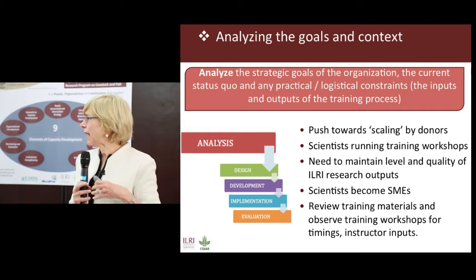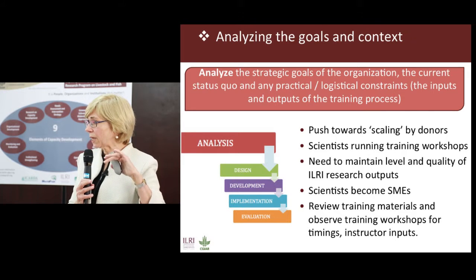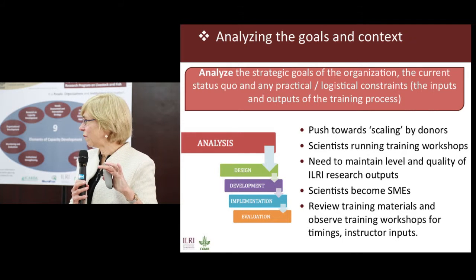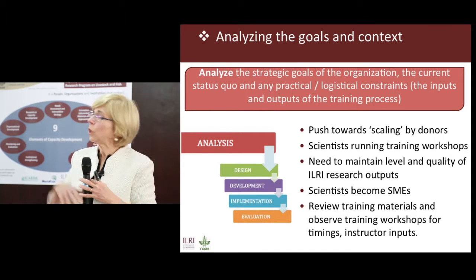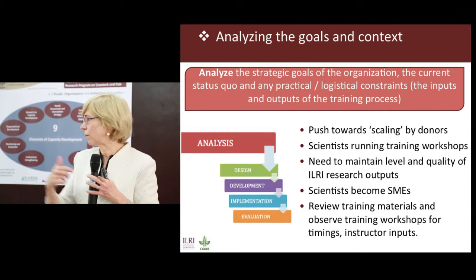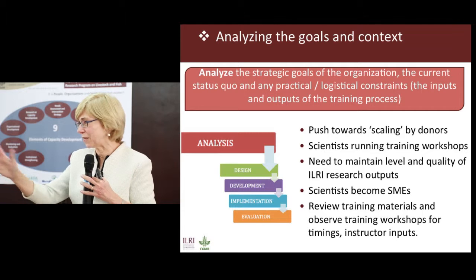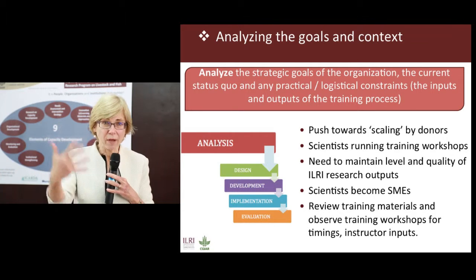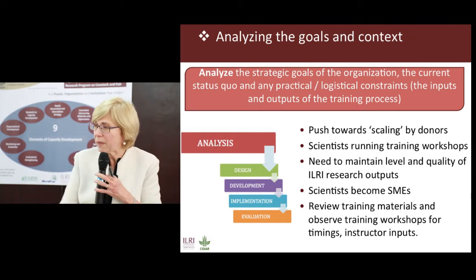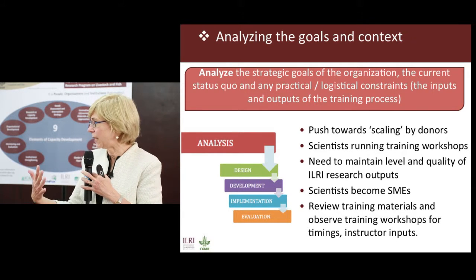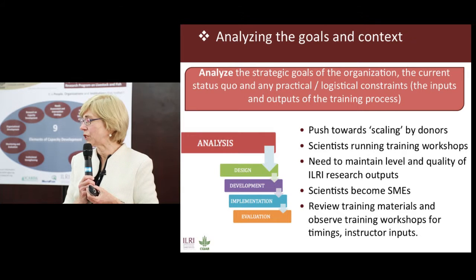We also analyzed where the pain points were — where people didn't understand things. For example, with the sampling strategy: when you invite people into a focus group, you can't just invite the five men you meet on the street. You need women, men, large-holding farmers, and people with only a hectare of land, so that the solution is relevant to the whole community. That was difficult for people, so the designers actually developed a game to help with sampling.